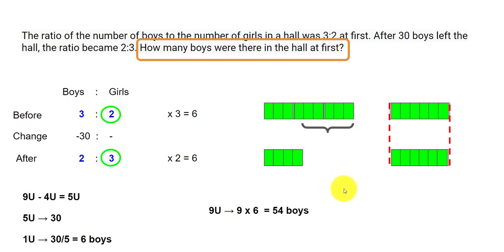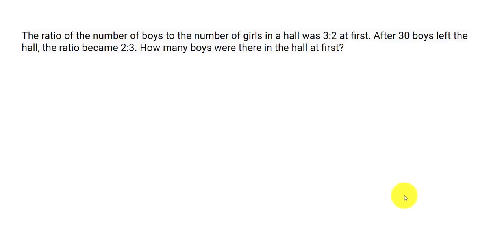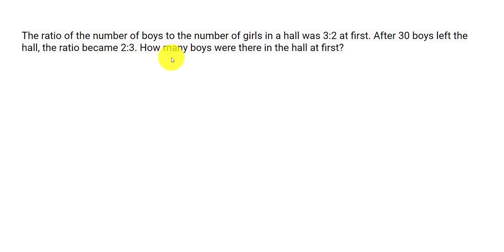Now we move on to the algebraic method. If you prefer the model method, you can skip this part; otherwise, please continue. The problem again: the ratio of the number of boys to the number of girls in a hall was 3 to 2 at first. After 30 boys left the hall, the ratio became 2 to 3. How many boys were there in the hall at first?